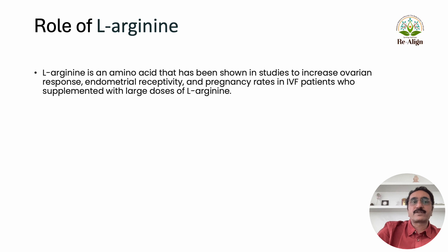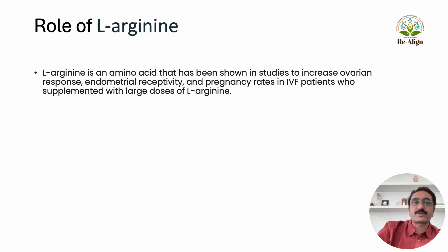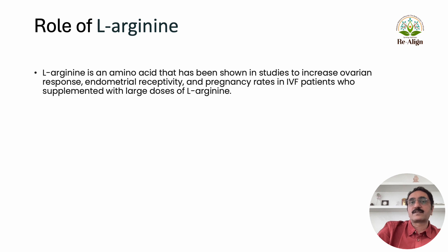Another antioxidant is L-arginine, which is also very important — it improves ovarian function, ovarian response, and endometrial receptivity. It is very important to take this if you are trying to conceive or if you are going through IUI or IVF. This is a key antioxidant to consider.